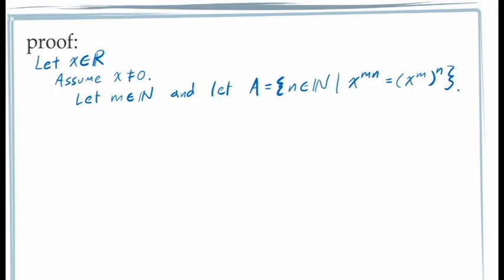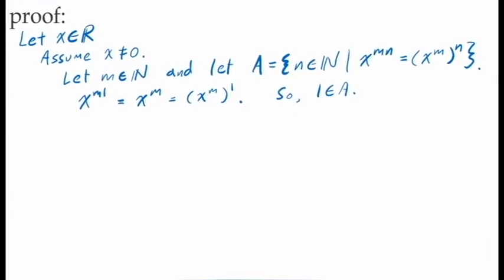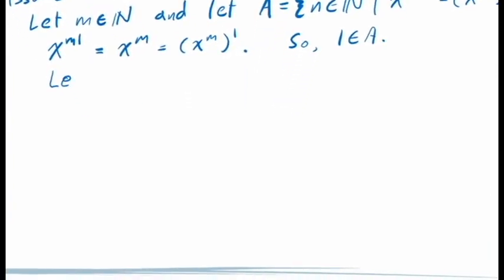To prove that the number 1 is in the set A, we look at the left-hand side of this equation when n has a value of 1. This gives us the expression x to the exponent m times 1, which is x to the exponent m. And of course, the expression x to the exponent m when raised to the power 1 is x to the exponent m. And so this gives us x to the exponent m raised to the exponent n when n has a value of 1. This proves that the number 1 is in the set A.